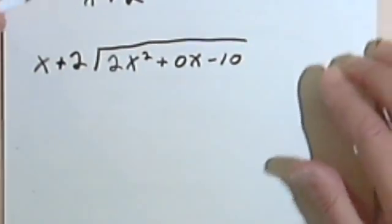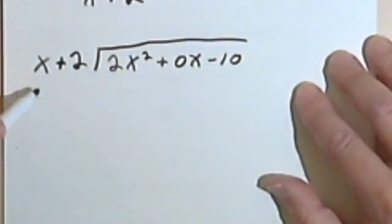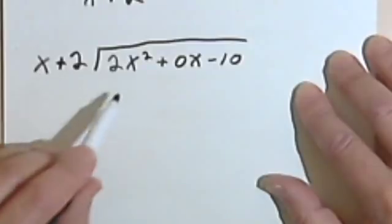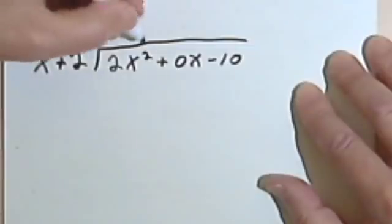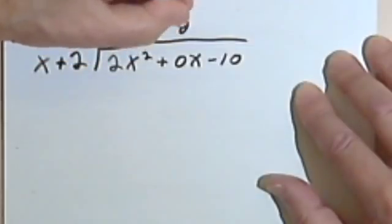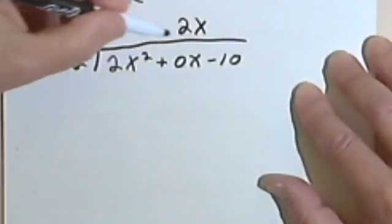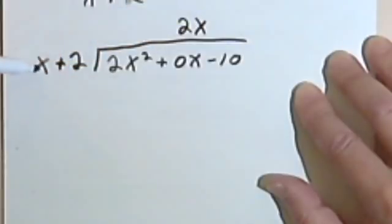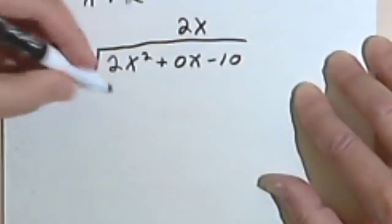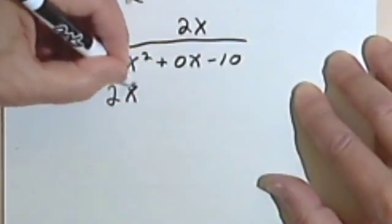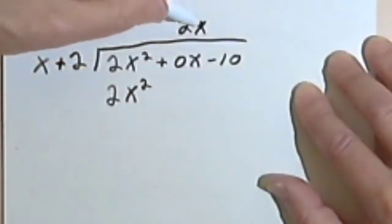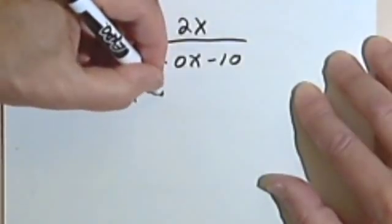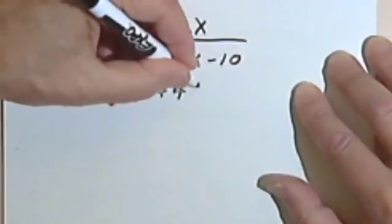And now I'm going to do this problem just like the other one. So I take this first term, this x, and divide it into this first term, 2x². That's going to give me a 2x. I multiply 2x times x + 2. So 2x times x is 2x². They're both the same, that makes me happy. Then I've got 2x times 2, that will be +4x.